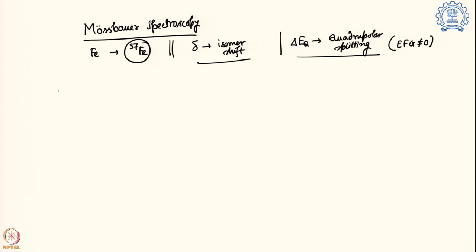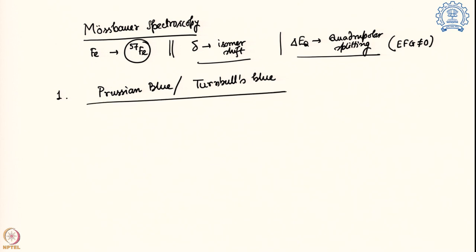The first example we are going to discuss is Prussian blue and Turnbull's blue. These are well-known coordination complexes prepared well back about 78 years ago, and there has been a lot of controversy about their structure. We will find out today how Mössbauer spectroscopy helped us to understand the actual structure, resolve the absolute structure, and move out any remaining controversy.